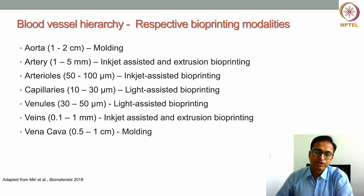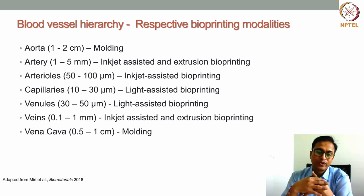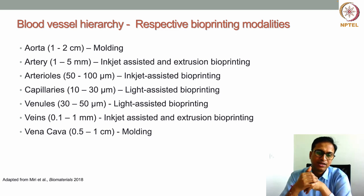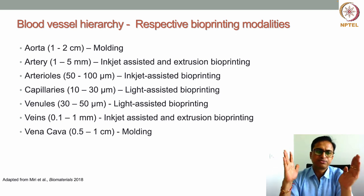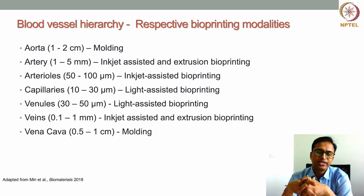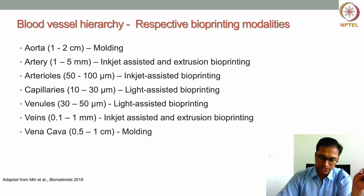The vena cava, with a typical diameter of 0.5 to 1 centimeter, is best fabricated with molding techniques, as other techniques are not as suitable. This gives an overview of all the different blood vessel structures and the respective bioprinting modalities that can be used to develop each particular blood vessel structure.